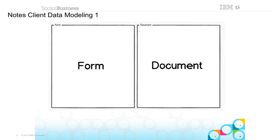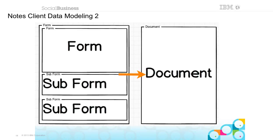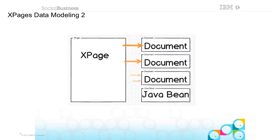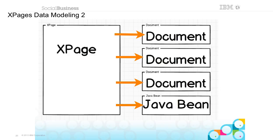Not only do you have different tools, but your data modeling is different. In client development you had a form and a document — you were only ever really working with one document at a time on your screen. In XPages you can have an XPage that points to three documents and a Java bean, or include a view. The way you work with data is much different, and your capabilities are much greater than they ever were before.